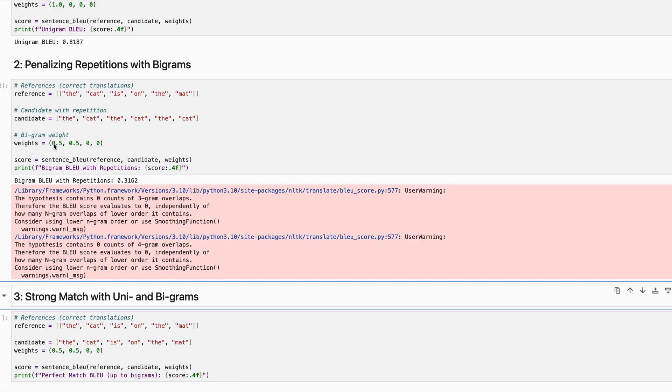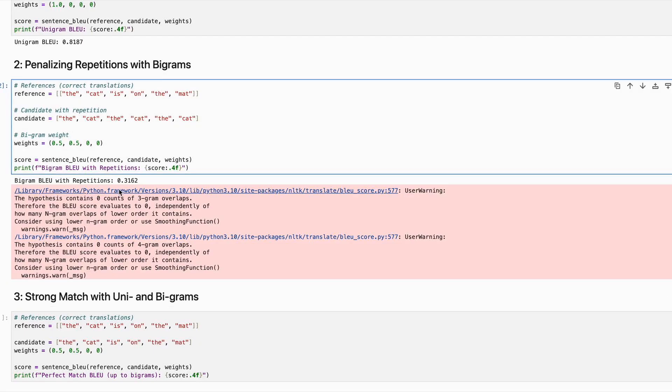What we have done is we have given bigram and unigram weightage of 0.5, as you can see. So it will consider the unigram and bigram translations. It is giving a bigram BLEU score of 0.3162.